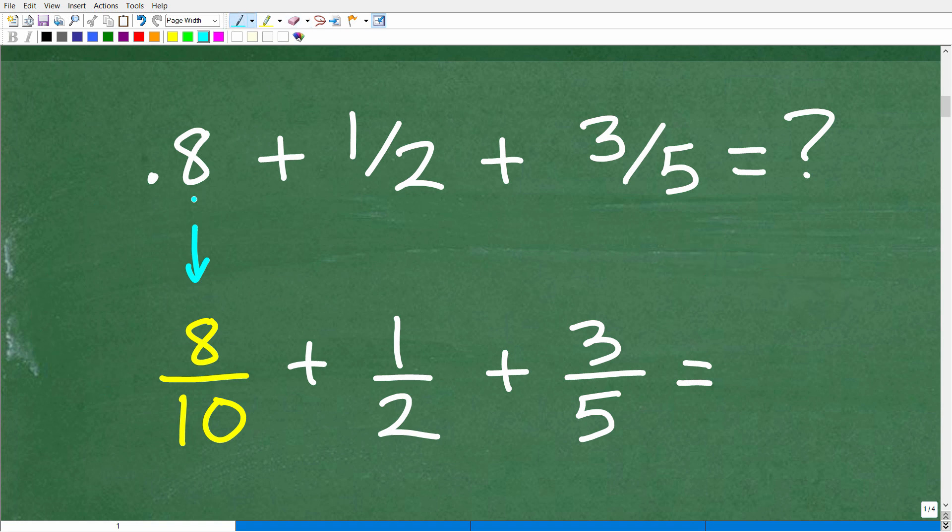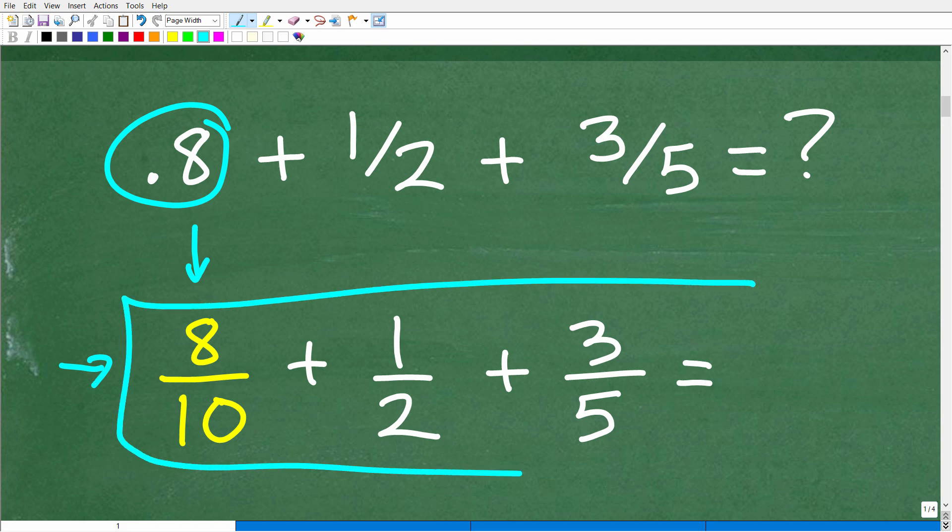Alright. So, again, the 8 is in the tenths place. So we just kind of write this fraction in terms of the way we would say this. So this is 8 tenths or 8 over 10. Okay. So 0.8 is 8 tenths or the fraction 8 over 10. So now we have this equivalent problem right here.